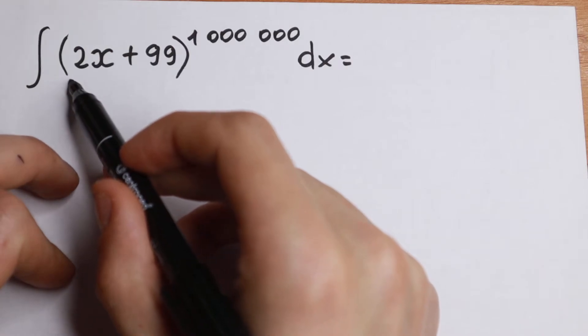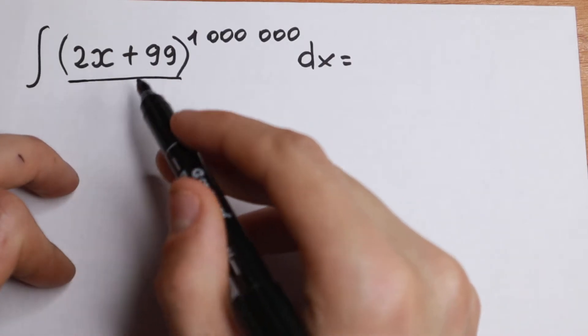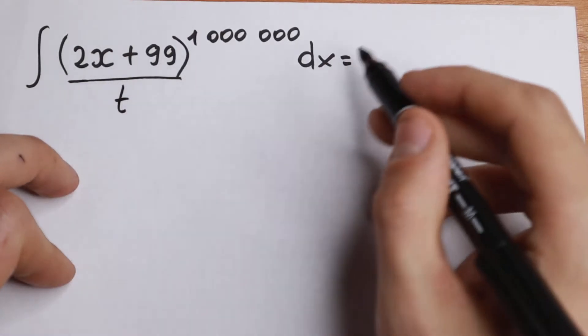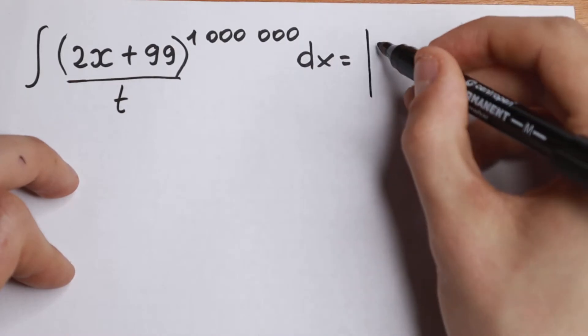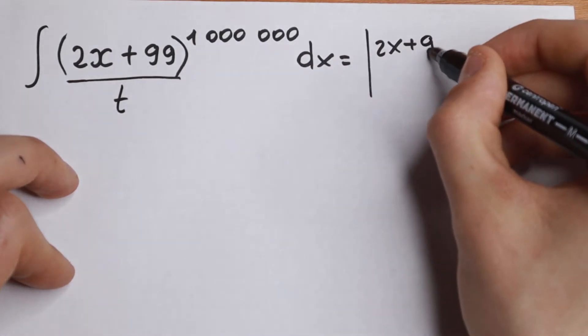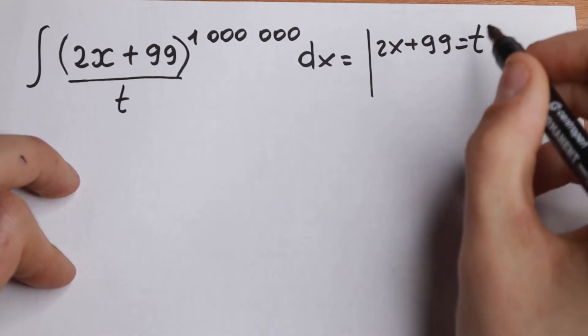So first of all, we need to write a substitution. Let 2x + 99 equal our t. So let's write it: we will have 2x + 99 will be our t.